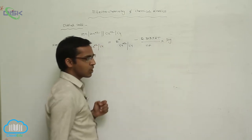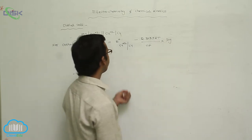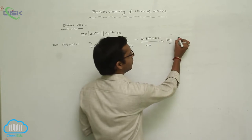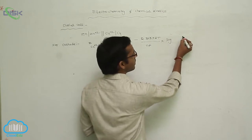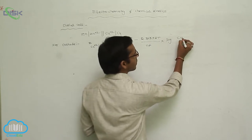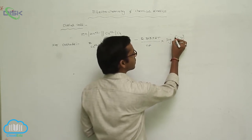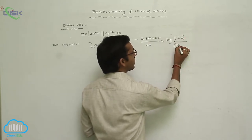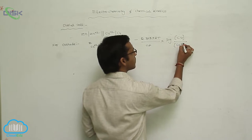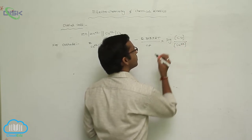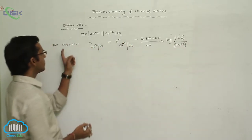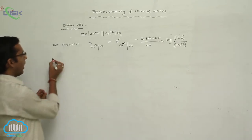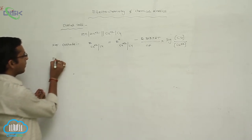The log term is the concentration of product over reactant — that is, concentration of Cu metal by concentration of Cu²⁺ ion. This is the Nernst equation for the cathode.